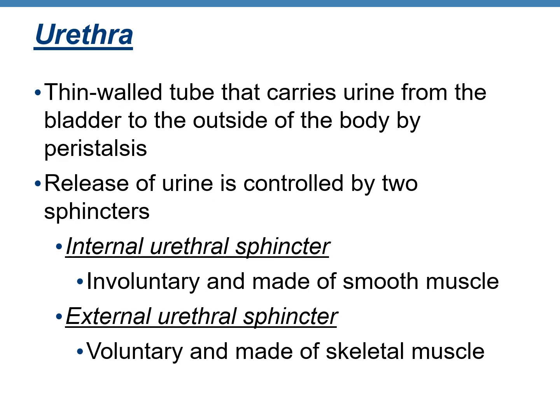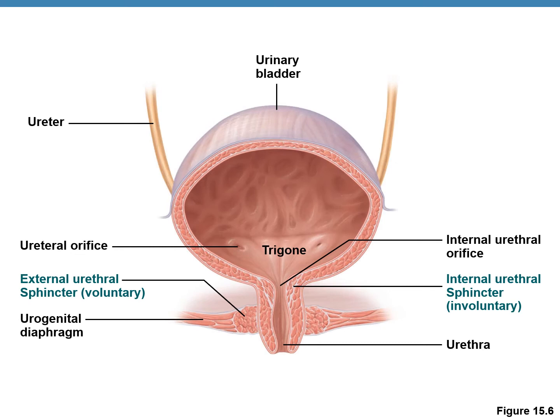The urethra is a small tube used to carry urine from the urinary bladder to the outside. It is the tube used for micturition, and urine moves through the urethra by peristalsis. The release of urine is controlled by two sphincters: the internal urethral sphincter (smooth muscle, involuntary) and the external urethral sphincter (skeletal muscle, voluntary). This figure shows both sphincters.